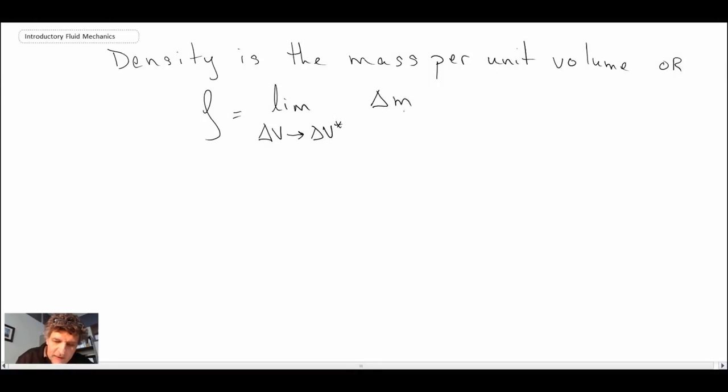And I'll define that in a moment. And if we take delta M, that's the mass in this delta V that we're looking at, that would be the definition of density. Now, it turns out that this delta V star that I've indicated here, as that approaches a certain value, and that value turns out to be about 10 to the minus 9 millimeters cubed. Once we approach that, that's when we start to be able to have the continuum approximation or assumption, where we assume that the properties then won't change much as we increase in our sample size.